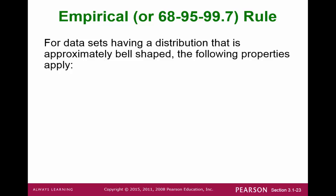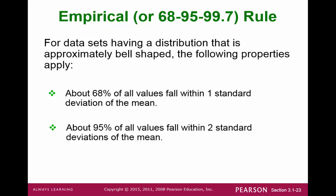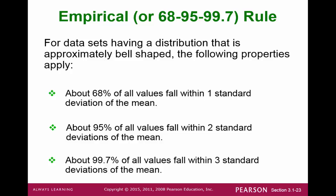Another important and very popular result is the empirical rule, sometimes called the 68-95-99.7% rule. This states that for a bell-shaped curve, about 68% of the data will fall within one standard deviation of the mean, 95% will fall within two standard deviations of the mean, and 99.7% will fall within three standard deviations from the mean.